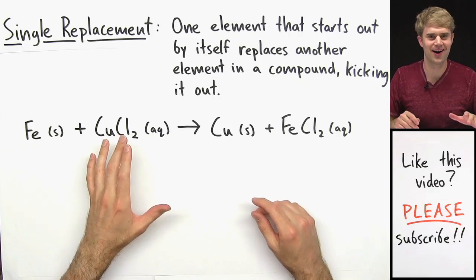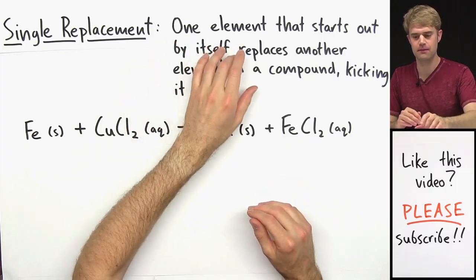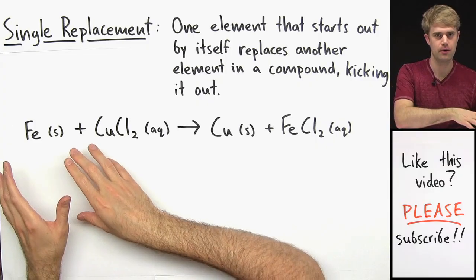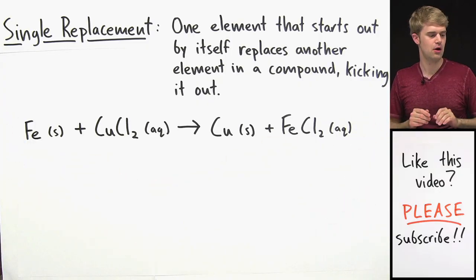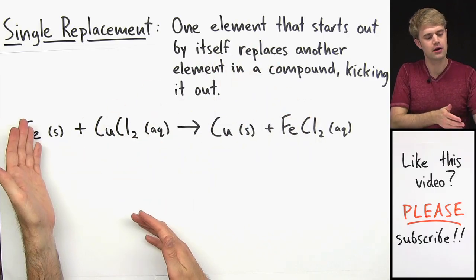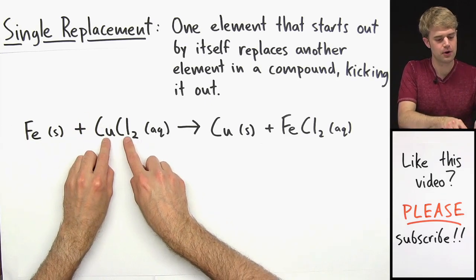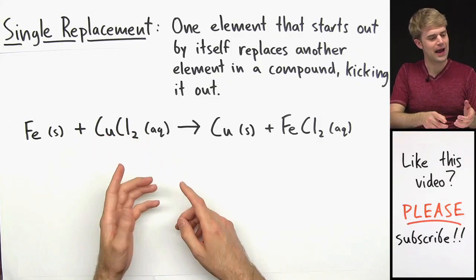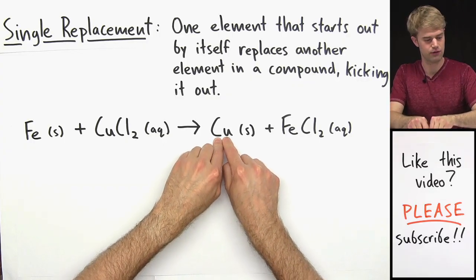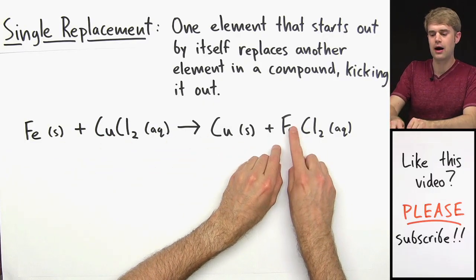Single replacement reactions break my heart, and in a minute you'll see why. In a single replacement reaction, one element that starts out by itself replaces another element in a compound, kicking it out. Here's an example: we start out with iron, Fe, which is the element by itself. Iron combines with CuCl2, which is copper chloride. What happens is iron kicks out the copper, Cu. So Cu ends up by itself, and Fe, the iron, takes the place of that copper, so now iron and Cl are paired up.